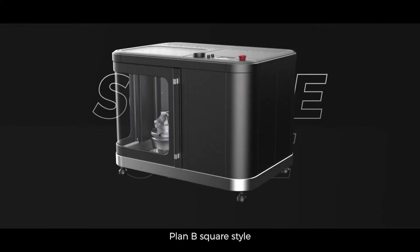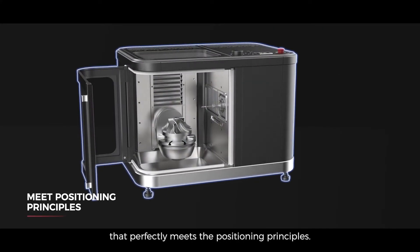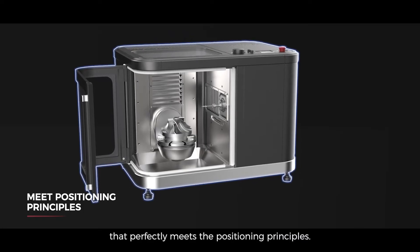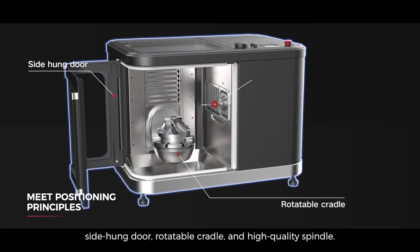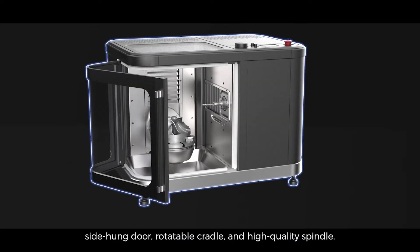Plan B, Square Style. Plan B is a complete design scheme that perfectly meets the positioning principles. This plan has the following distinctive designs: side hung door, rotatable cradle, and high-quality spindle.